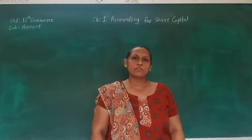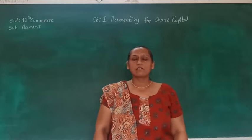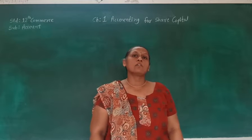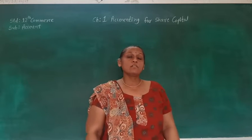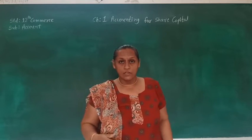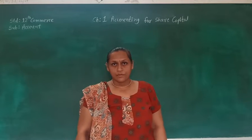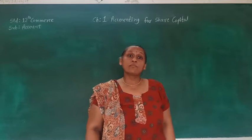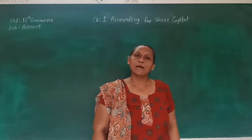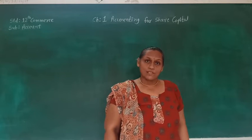Hello students, today we are going to see chapter number 1 of part 2, that is accounting for share capital of standard 11 commerce subject accounts. Today we are going to see IPO and FPO, and the method of issue of shares, and over subscription and under subscription. This is the 4th part of chapter number 1, and parts 1 to 3 are already linked in the description. Let's see under and over subscription first.